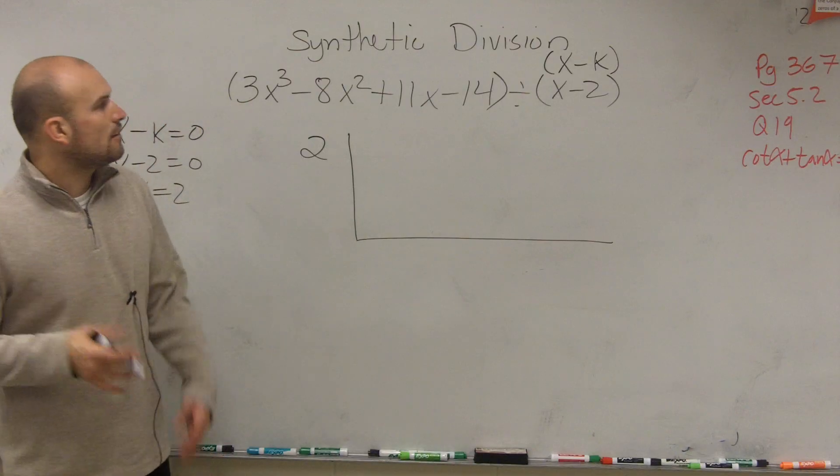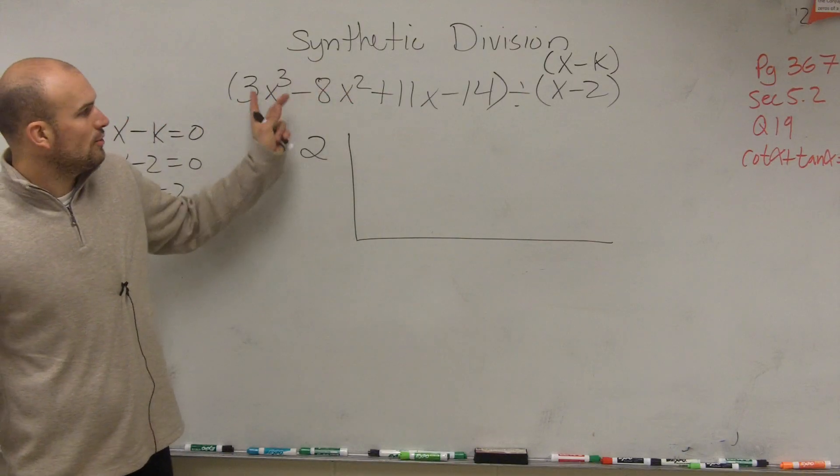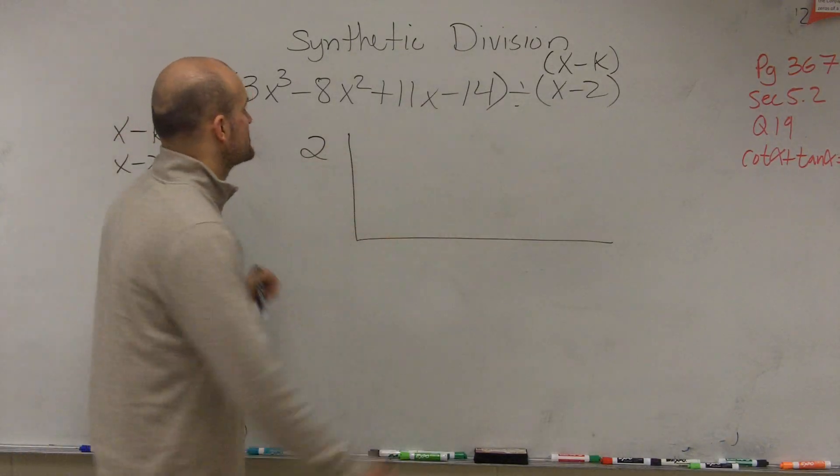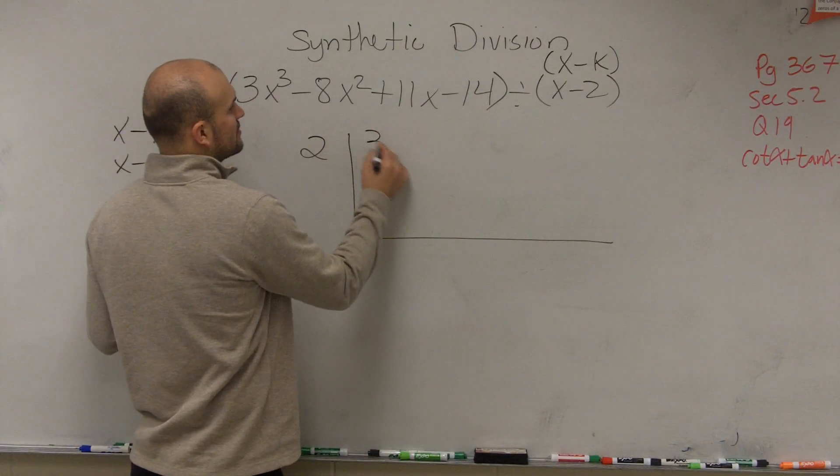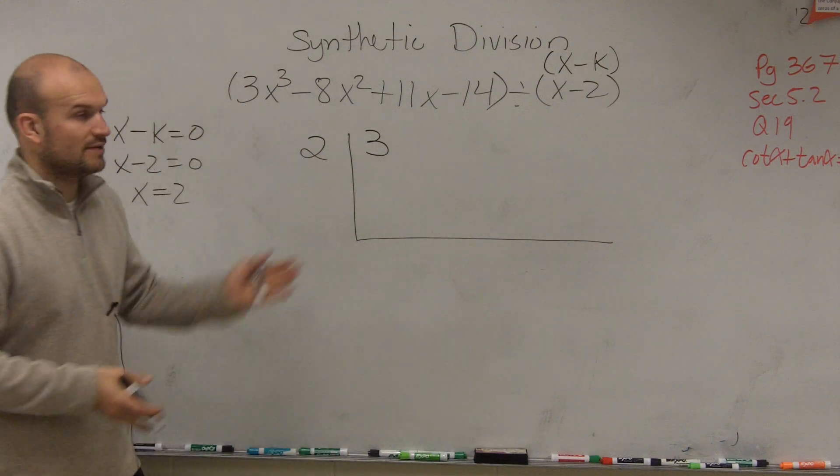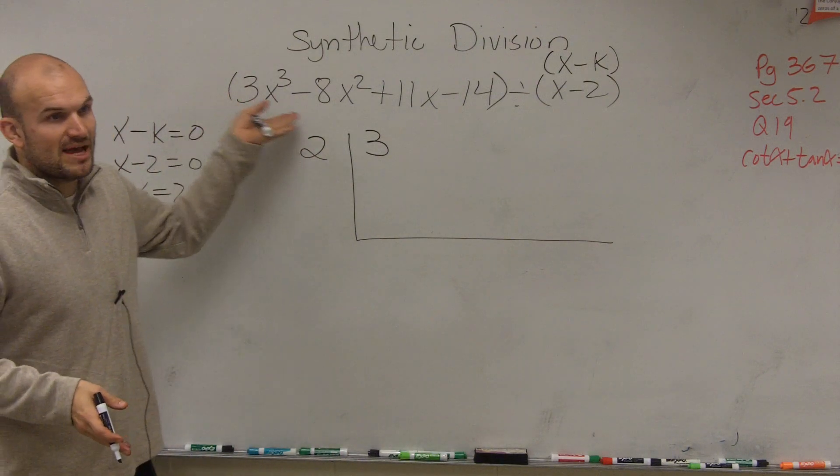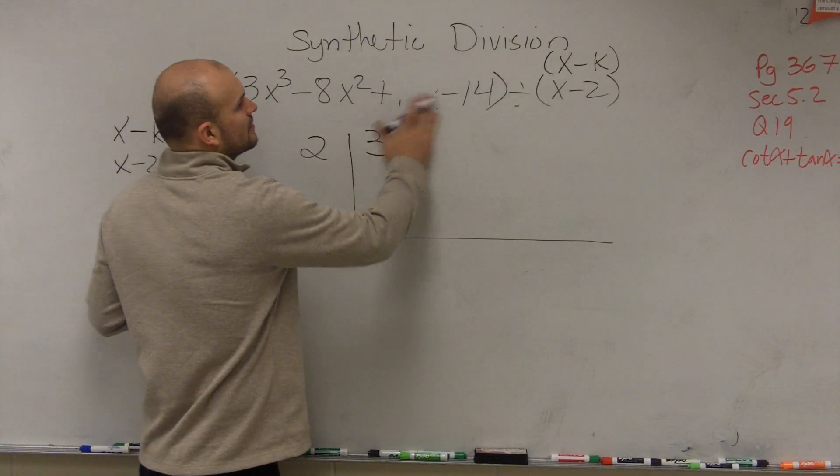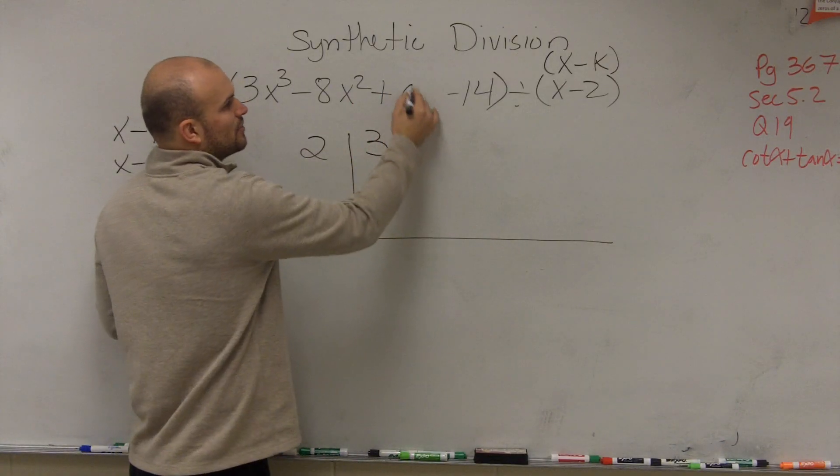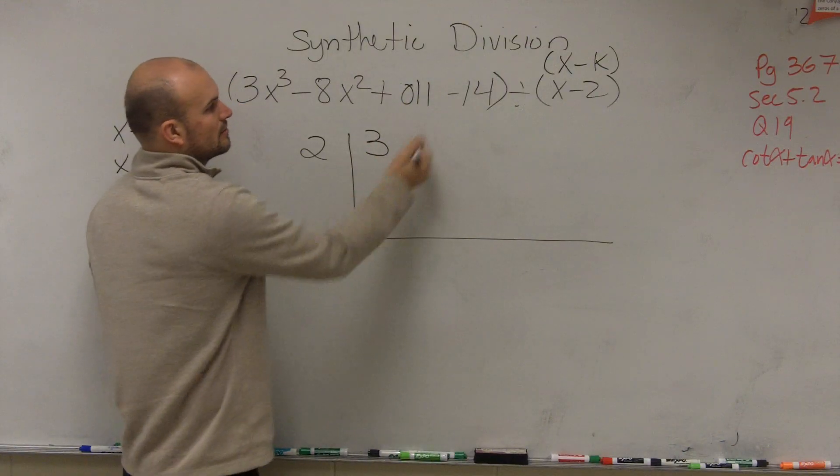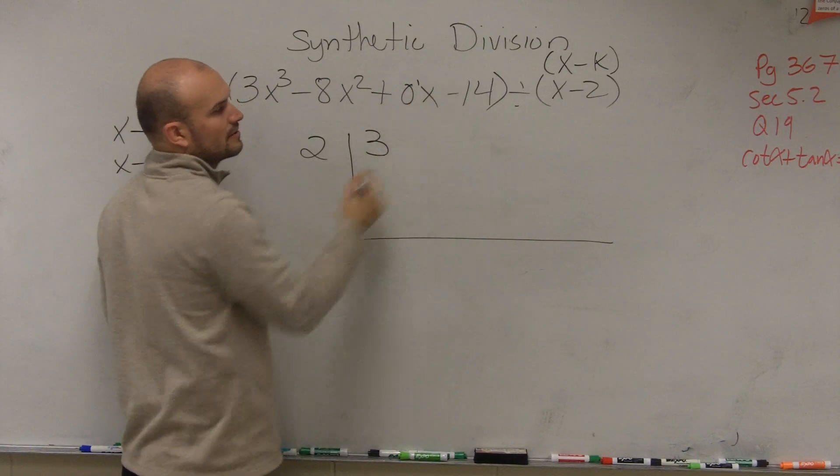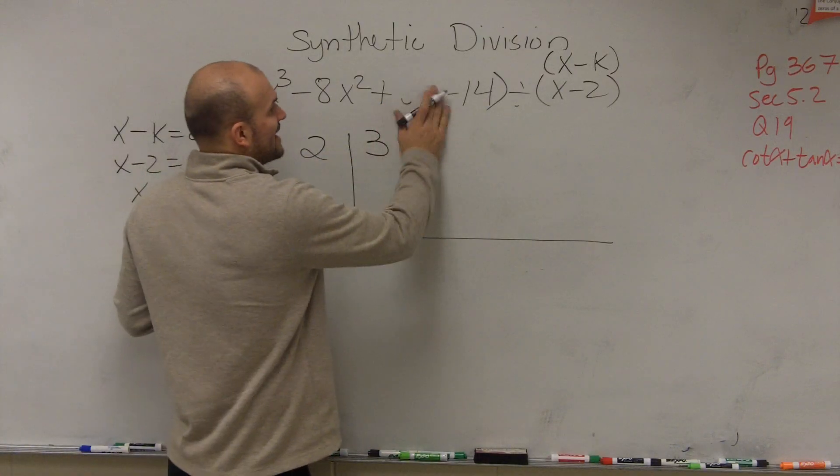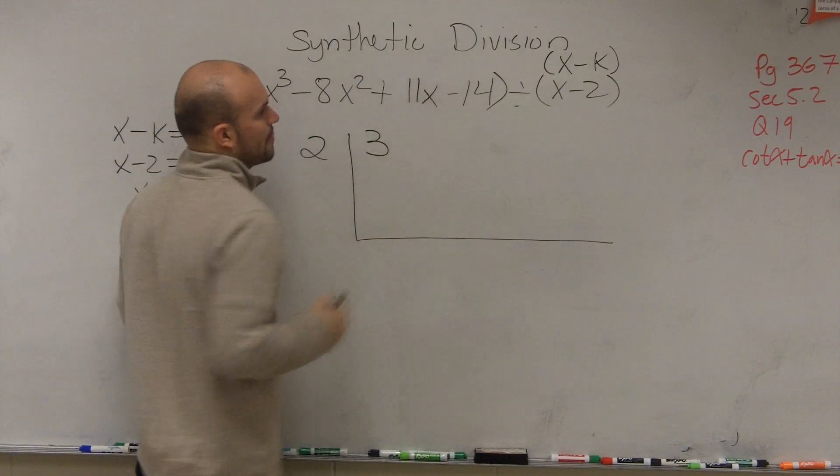Now we're going to take each coefficient of our terms and write them in kind of an invisible column. Our first coefficient is 3. We're always going to start with the leading term and make sure you go in descending order. If you are missing a term, like say there was no 11x, then you'd put a 0 there. But we do have an 11x.